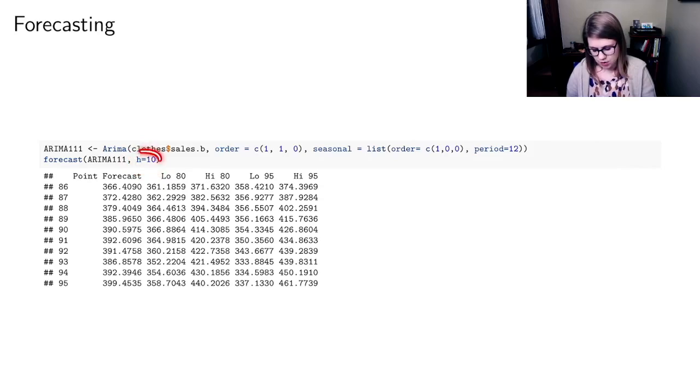So in this case, I said, go out another 10 years. And so it will do a point forecast. So I would forecast the year after this data ends that you would sell $366 billion, $372 the year after that, $379, etc. So you get point forecasts.